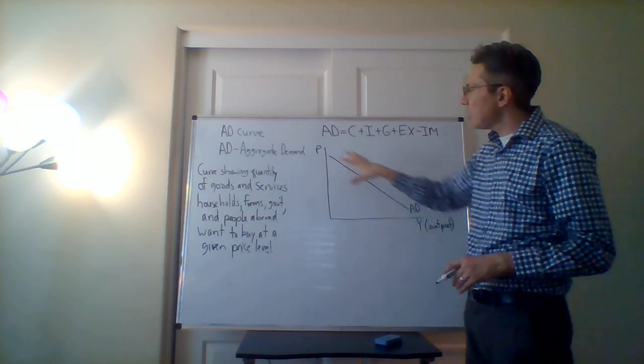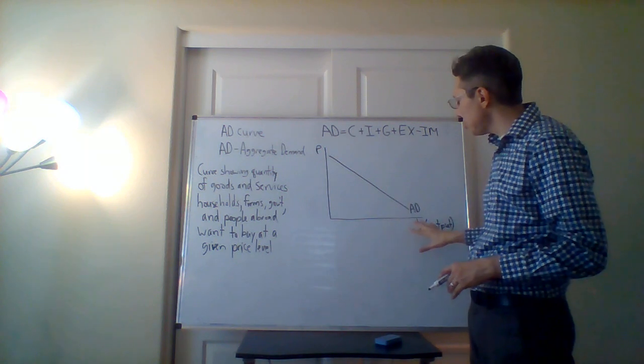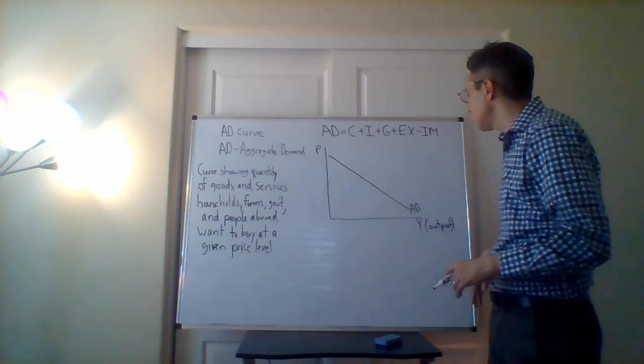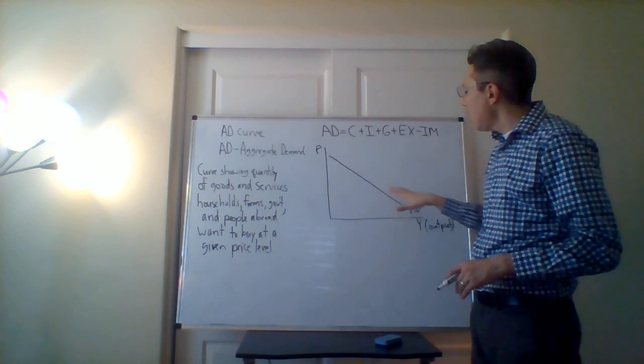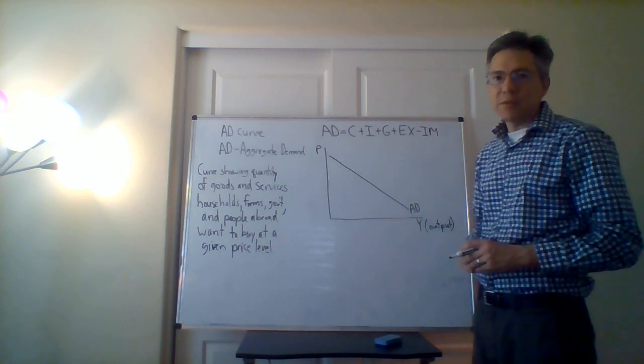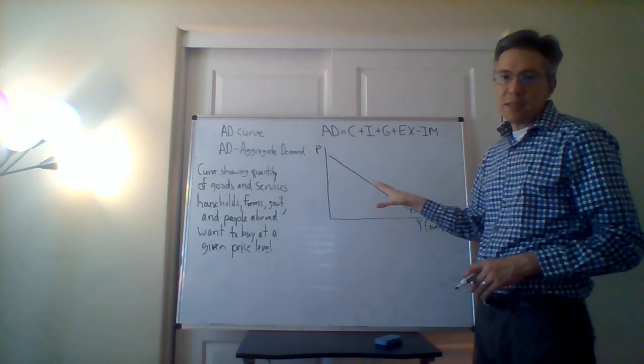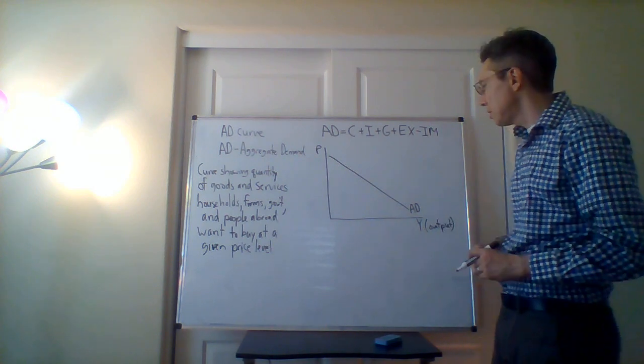And so this is supposed to represent a negative relationship between the output and prices, or should I say between aggregate demand and the price level. And so what explains this relationship?